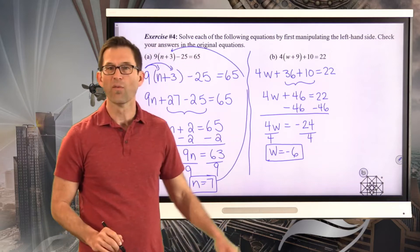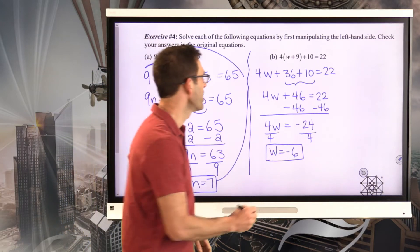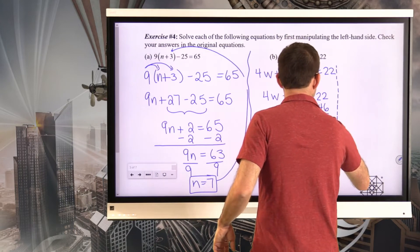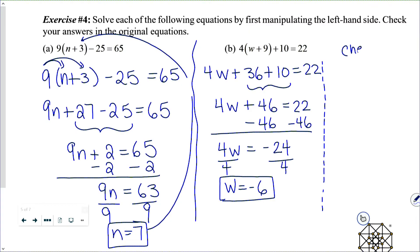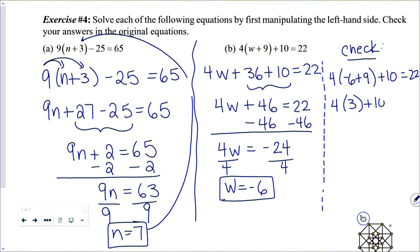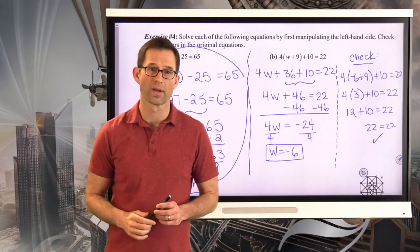Let's do the check: 4 times negative 6 plus 9, plus 10, equals 22. Negative 6 plus 9 is positive 3, plus 10 equals 22. 4 times 3 is 12, plus 10 is 22. And 22 equals 22, so it checks. w equals negative 6 is the correct answer.